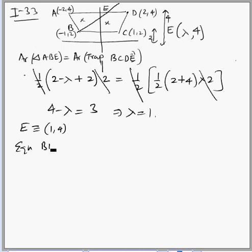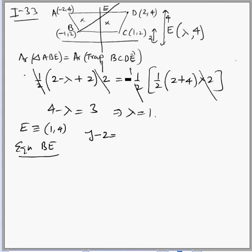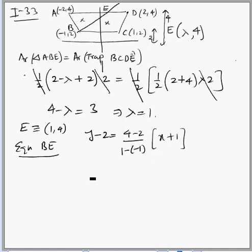Now we find the equation of line BE using the two-point form. We know B is (-1, 2) and E is (1, 4). So: y minus 2 equals the slope times (x plus 1). The slope is (4 − 2)/(1 − (−1)) = 2/2 = 1. Therefore y − 2 = x + 1, which gives y − x = 3.